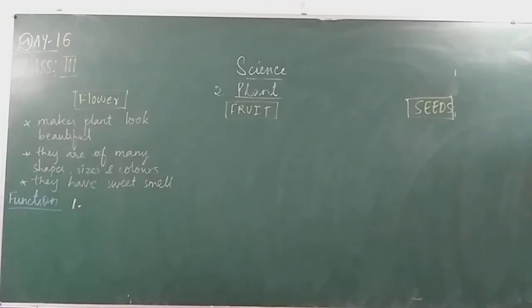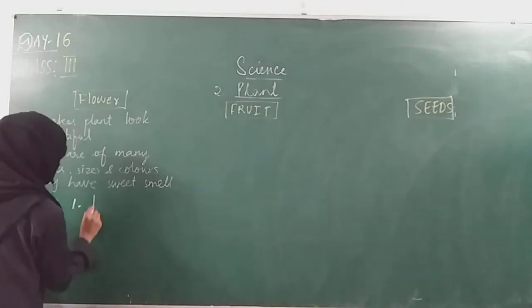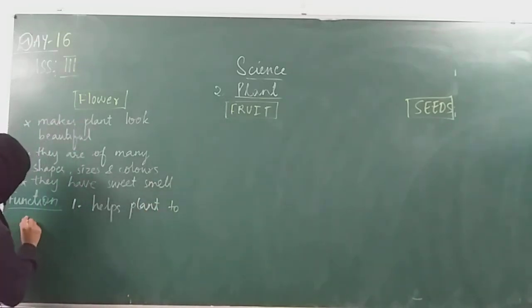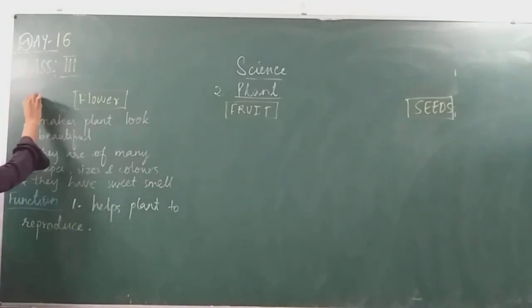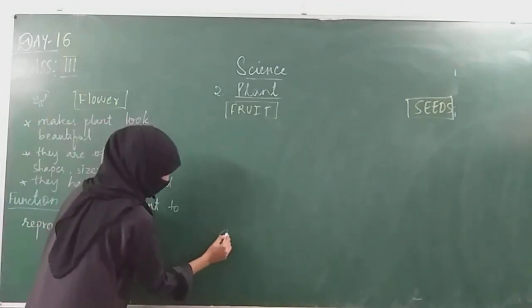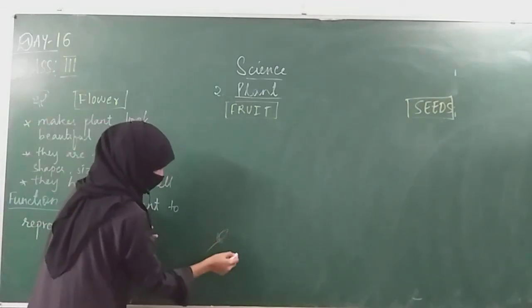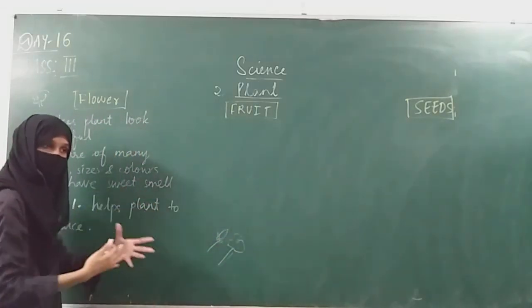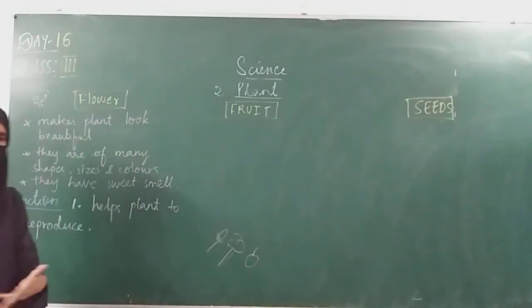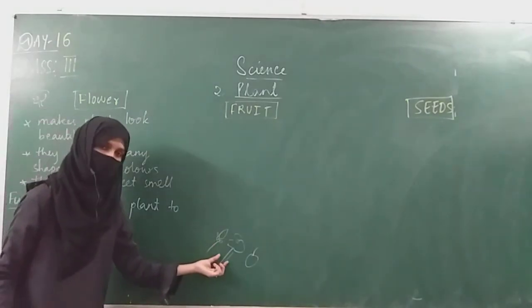Flower is a part of the plant that changes itself into a fruit. Flower helps a plant to reproduce. First, the flower starts as a small bud, then it grows into a big flower. As the flower grows older, it changes itself into a fruit, depending on the plant.